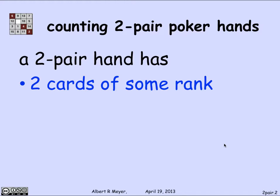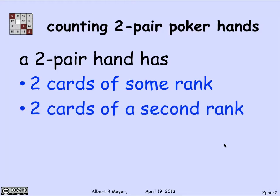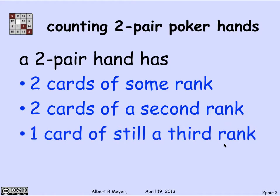We're going to choose two cards of some rank — that's called a pair. Then we're going to choose two cards of a different rank, a second rank. And finally, we're going to choose a card of still a third rank, so I get a pair and another pair and another card that does not match the ranks of either of the first two. That is the definition of a hand called two-pair.